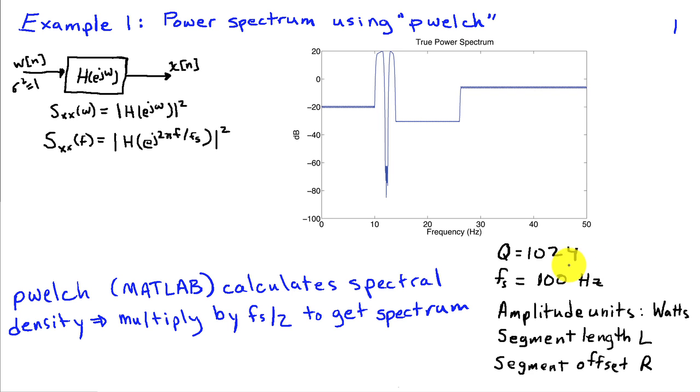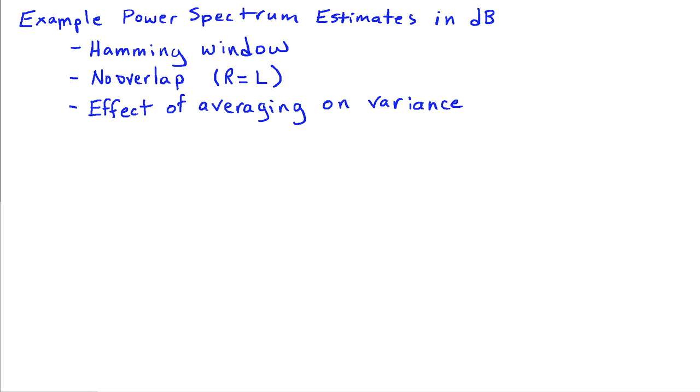So we're going to start off with 1,024 available samples. We'll assume our sampling frequency is 100 hertz. Hence, in our true power spectrum, we're going from 0 to 50. The amplitude will be in units of watts, although we're going to display that in dB. We'll have length L for the segments that we use in pwelch, and R will be the offset between successive segments. So the amount of overlap between segments is given by L minus R. So when L is equal to R, the segments don't overlap at all. So we're going to begin by looking at the Hamming window, and we'll assume there's no overlap, and we'll just try to look at the effect of averaging on the variance of the spectrum estimates.